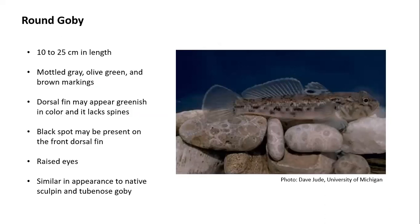Round goby is about 10 to 25 centimeters in length with mottled gray, olive green, and brown markings. The dorsal fin may appear greenish in color but lacks spines. Sometimes the front dorsal fin might have a black spot, but don't use the absence of that black spot as an identifying feature — in the round goby infestation in Lake Erie, most of them don't have that spot. The round goby also has raised eyes and is similar in appearance to native sculpin and the tube nose goby.